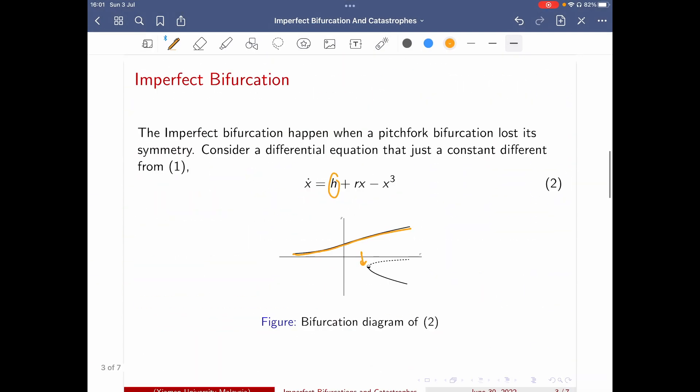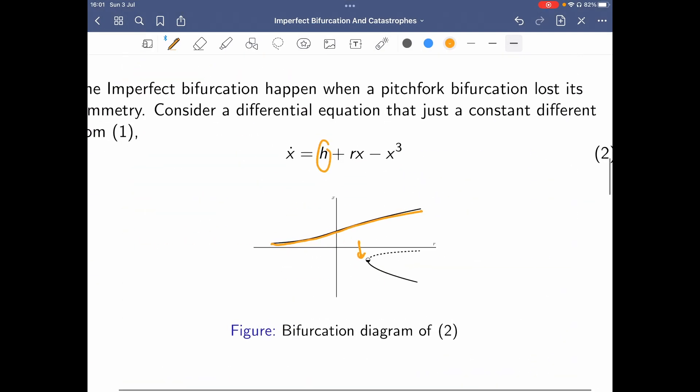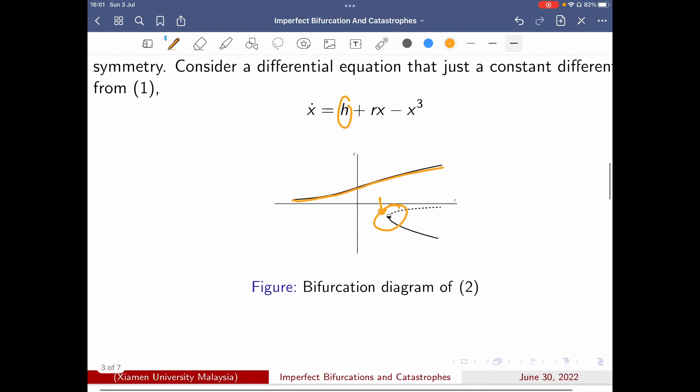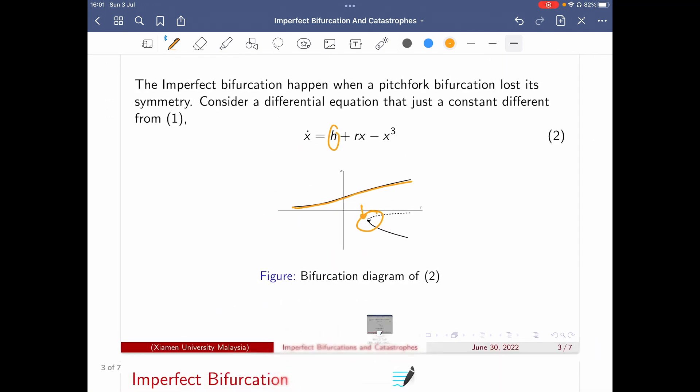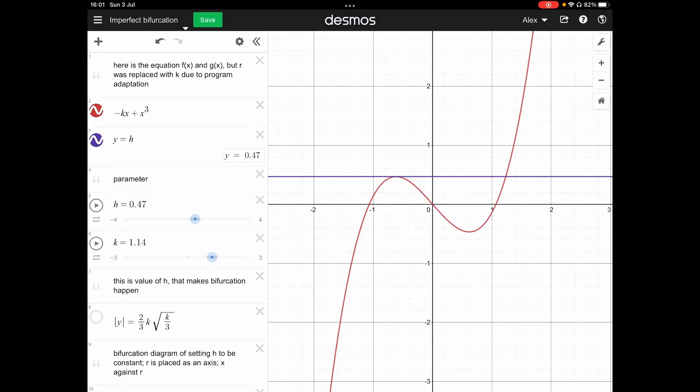This is where the saddle point will happen. Like just now the picture, you can see the upper one. There happens to be a saddle point at this position. So this is exactly what's happening. Here, as it increases, even past it,